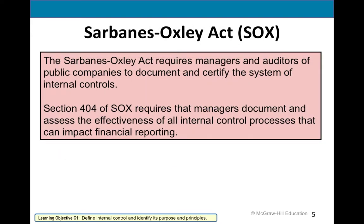In the early 2000s, after Enron and WorldCom, there was a lot of fraud. So the government stepped in and, for all publicly traded companies, passed what's called the SOX Act. Managers and auditors of a publicly traded company have to document and certify internal controls — what positives they have in place to protect assets and reduce and prevent fraud. They have to talk about the effectiveness: is it working, is it not working, and what are they doing every day to ensure fraud isn't occurring.